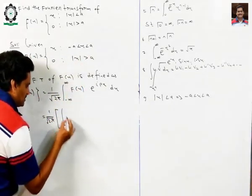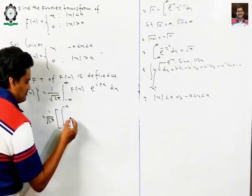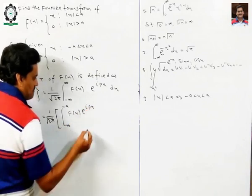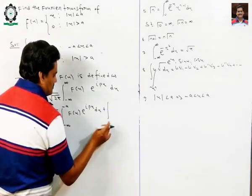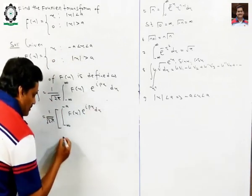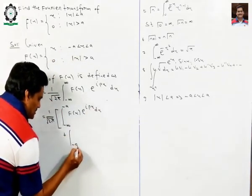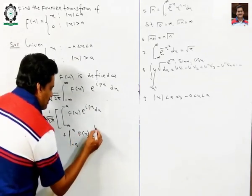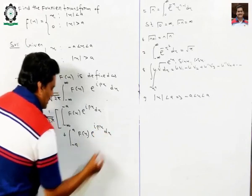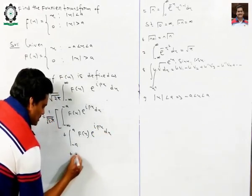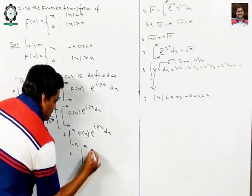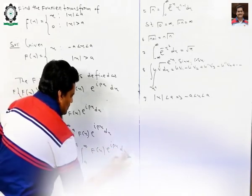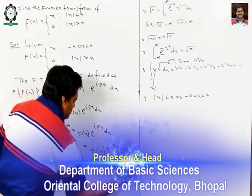This is minus infinity to minus a: f(x) e to the power ipx dx, plus from minus a to plus a: f(x) e to the power ipx dx, and the third part we can write from a to infinity: f(x) e to the power ipx dx. We can break the function into these parts.